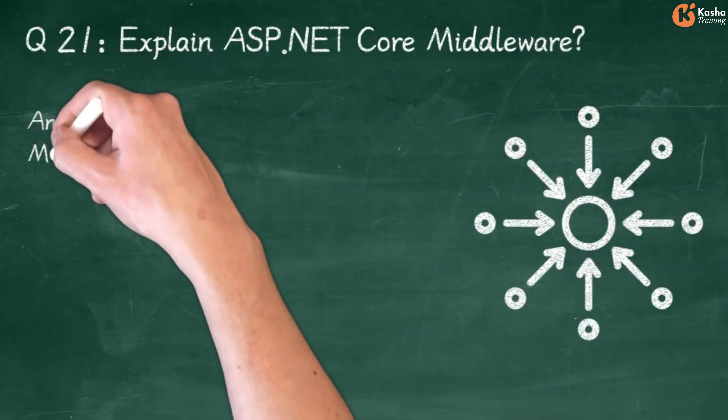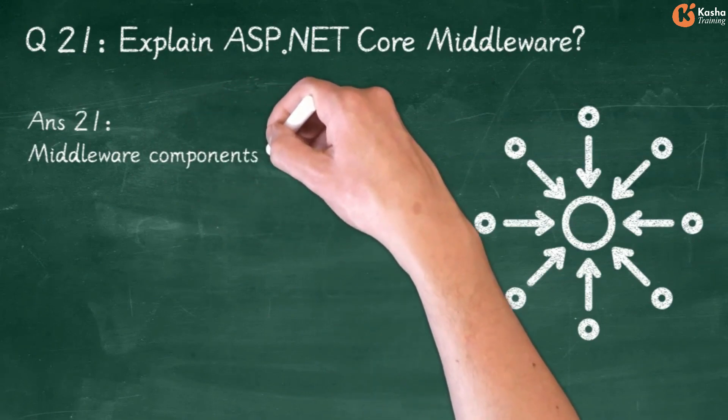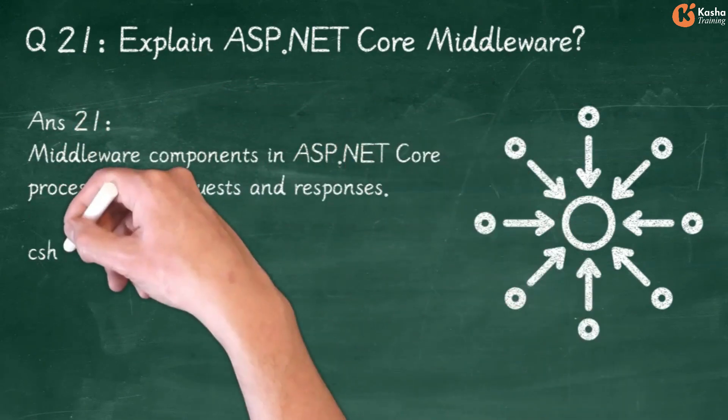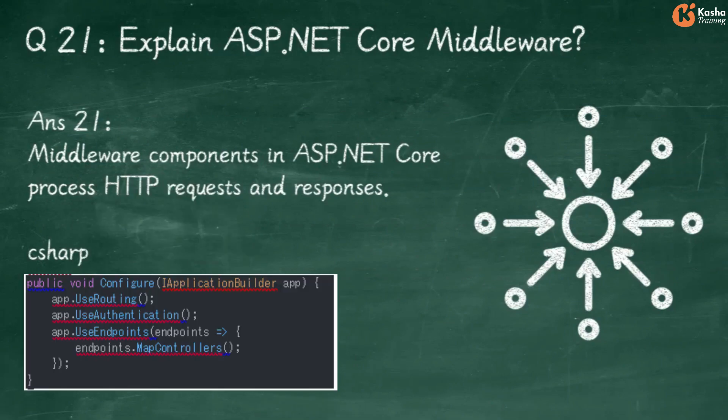Answer 21: Middleware Components in ASP.NET Core Process HTTP Requests and Responses. In C#: Public Void Configure with IApplicationBuilder App. App.UseRouting, App.UseAuthentication, App.UseEndpoints where Endpoints.MapControllers.